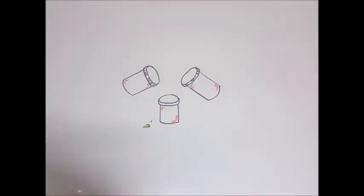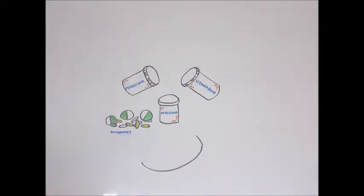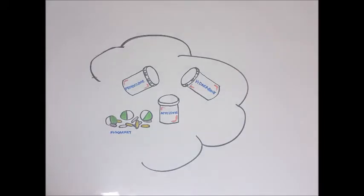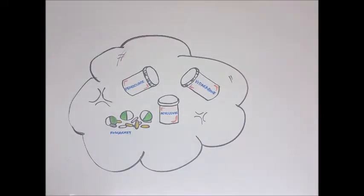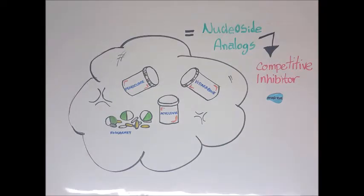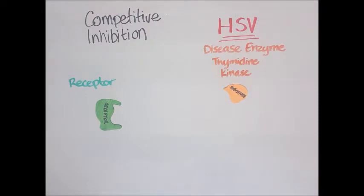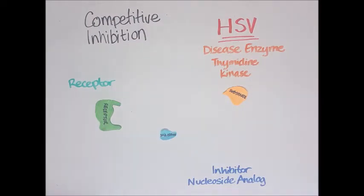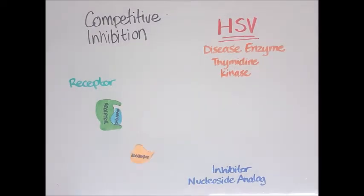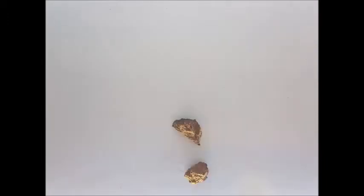Drugs for HSV: Currently, the herpes virus is being treated by penciclovir, acyclovir, vidarabine, and foscarnet. All these drugs are forms of nucleoside analogues. Nucleoside analogues prevent viral replication in infected cells by acting as competitive inhibitors. Competitive inhibitors are molecules which can connect to the same receptors as another molecule, except instead of allowing the receptor to carry out its function, it is inhibited. In the case of herpes, these nucleoside analogues inhibit thymidine kinase, which is an enzyme. When the receptor is filled by the nucleoside analogue, thymidine kinase cannot be phosphorylated. By disabling the phosphorylation of thymidine kinase, the herpes virus is no longer produced and the herpes complex is prevented from spreading.